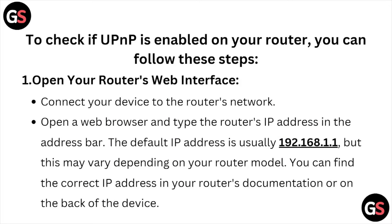To check if UPnP is enabled on your router, you can follow these steps. Open your router web interface: connect your device to the router network, open the web browser, and type the router's IP address in the address bar. The default IP address is usually 192.168.1.1, but this may vary depending on your router model. You can find the correct IP address in your router documentation or on the back of the device.